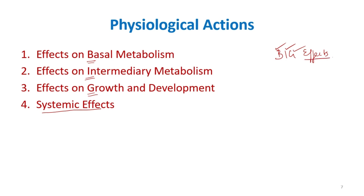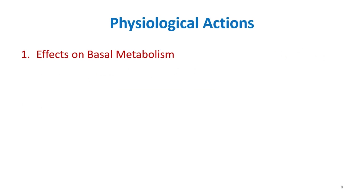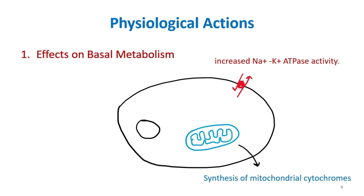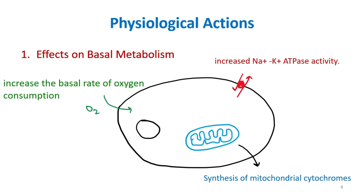Regarding the effect on basal metabolism: thyroid hormone increases the basal metabolic rate by increasing sodium-potassium ATPase activity. It also acts on the mitochondria and increases the synthesis of mitochondrial cytochromes. Because of this increased basal metabolic rate, there is increased consumption of oxygen.